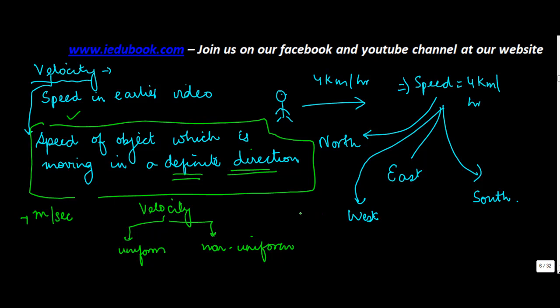And just like speed, the average velocity is equal to initial velocity plus final velocity upon 2. Mathematically it is written as u_av is equal to u plus v upon 2.